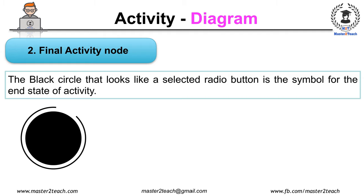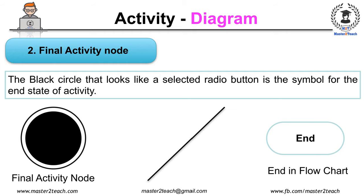In the flow chart we represent an oval shape labeled with the end in it, whereas in the activity diagram we represent with a small filled circle include borderline circle as shown in the figure.